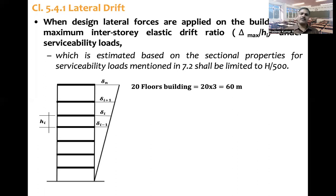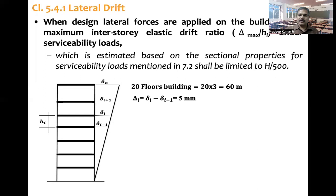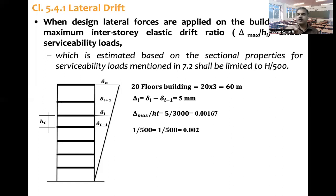Let us assume a building with 20 floors, each floor having 3 meters height, giving a total building height of 60 meters. Delta-i equals delta-i minus delta-(i-1). As an example, assume a drift delta-i of 5 millimeters. The interstory elastic drift ratio is: (delta-i minus delta-(i-1)) divided by H = 5 mm divided by 3000 mm = 0.00167. The code limits this to 1 by 500, which equals 0.002. Since 0.00167 is less than 0.002, the drift is within limits.